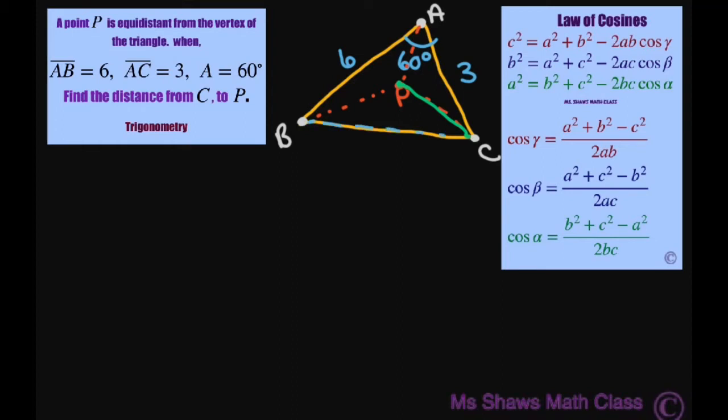So I'm looking at this length here and that would be length of BC squared equals 6 squared plus 3 squared minus 2 times 6 times 3 cos of 60 degrees. So this is going to equal, let's see, 36 plus 9 minus 36 times cos of 60 degrees is 1 half.